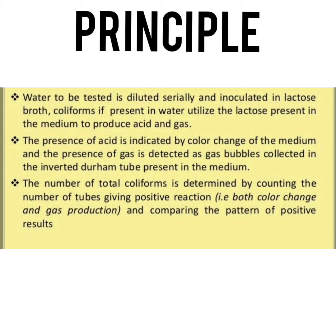The presence of acid is indicated by a color change of the medium, and the presence of gas is detected as gas bubbles collected in the inverted Durham tube present in the medium. The number of total coliforms is determined by counting the number of tubes giving positive reaction and comparing the pattern of positive results.